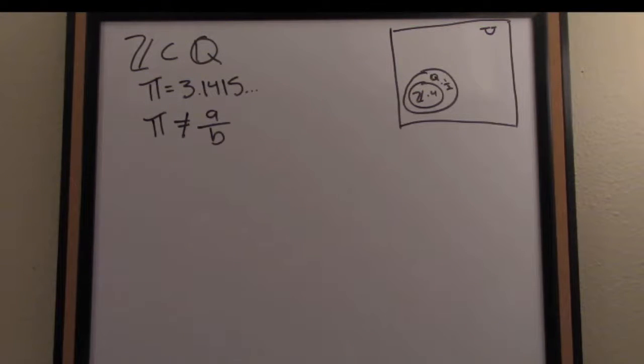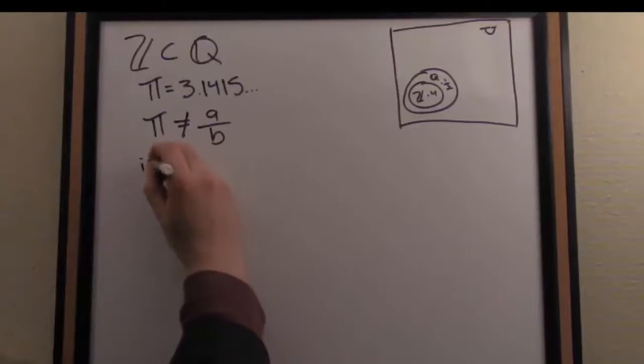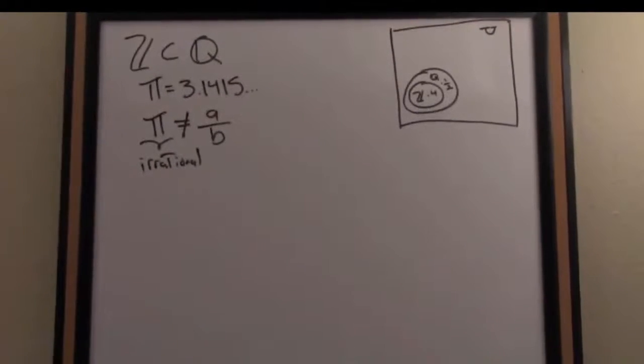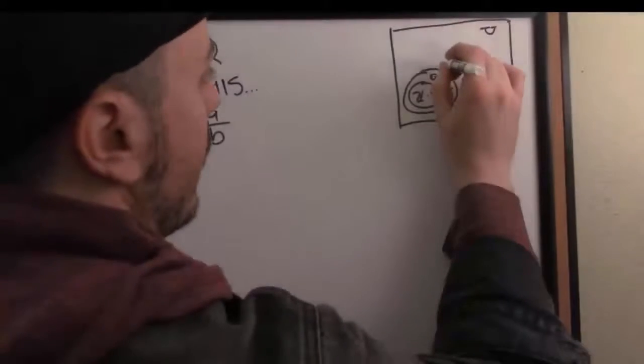So if a number can't be written in this fashion, if it can't be expressed in rational form, then it's called irrational. So pi is an irrational number. There's a number that's not in Q. Let's label that in our Venn diagram.